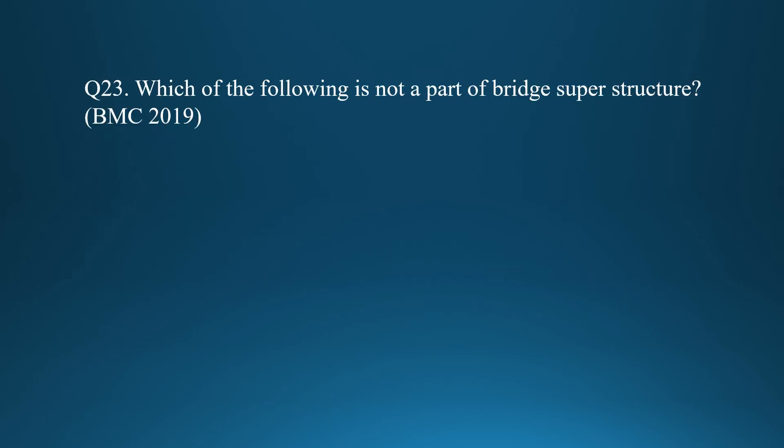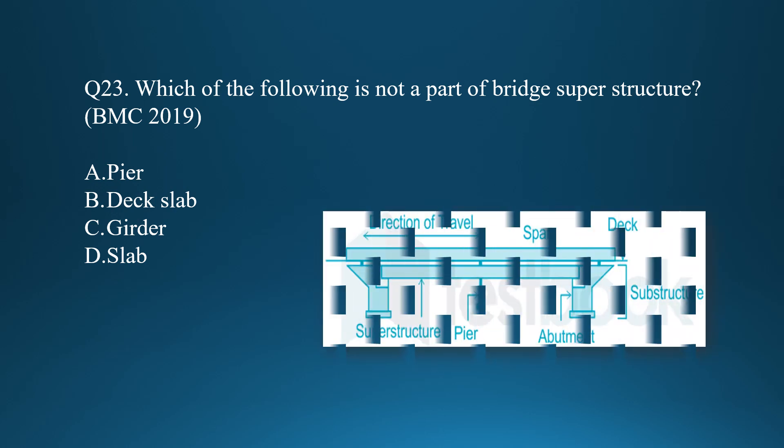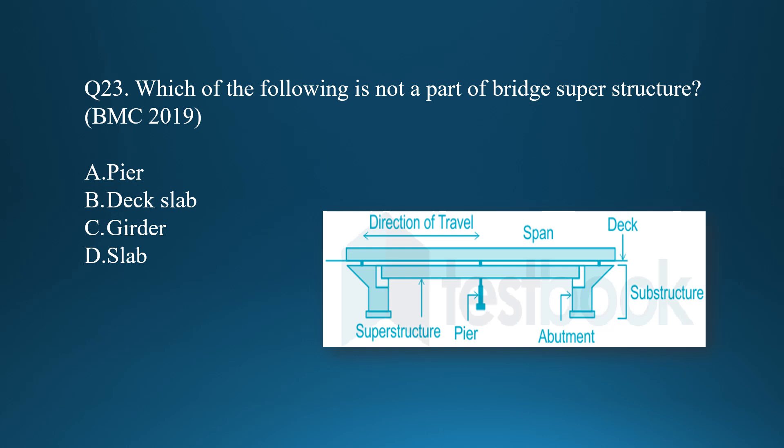Question twenty-two: which of the following is not a part of the bridge superstructure? Superstructure refers to parts above the ground, while a pier is below the ground — it is part of the substructure. Option A, the pier, is correct. These are the BMC exam questions — practice them and start preparing. All the best!